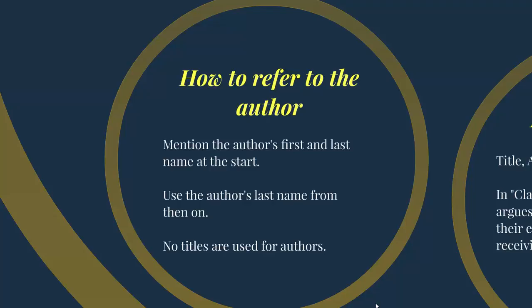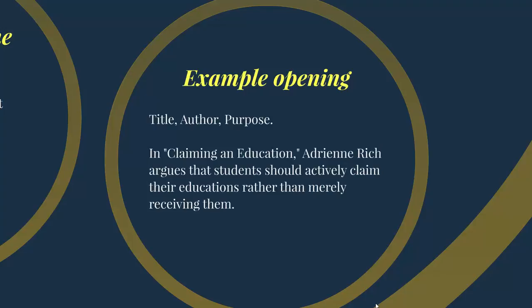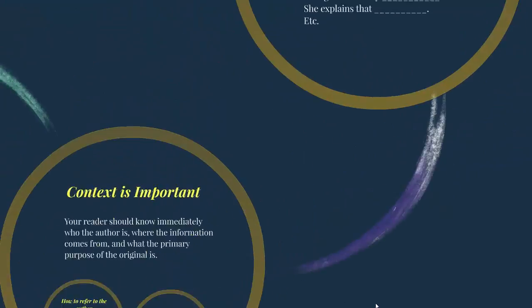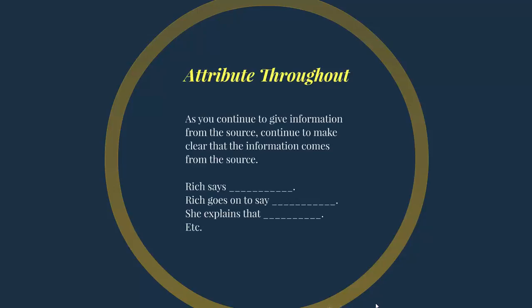When we talk about the author, the first time we mention them we can use both their first and last name. But from that point on, the convention is to mention the author by last name only. For example, if I was summarizing a piece by Adrienne Rich, I would first mention Adrienne Rich, but from then on I would refer to her as Rich. Throughout a summary, we don't use titles like Ms., Mrs., or Mr. — we just use the last name. The one exception might be an academic title like Doctor, but using the last name alone is usually always appropriate.